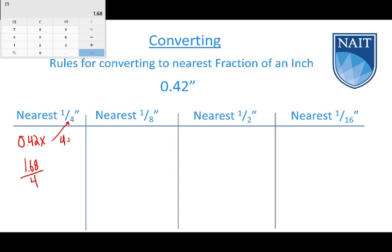In this case the digit is 6, so we round up to 2 quarters. We always reduce if we can — even though we're finding the nearest quarter, we don't leave it as quarters if it simplifies — so 2/4 reduces to 1/2. That means 0.42 inches to the nearest quarter is one half inch. It's closer to two quarters than to one quarter or three quarters.